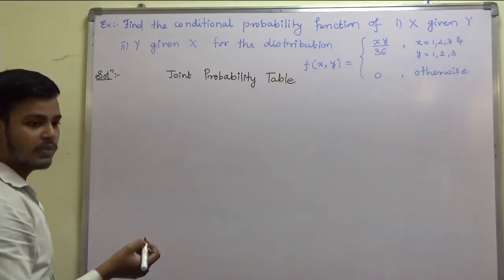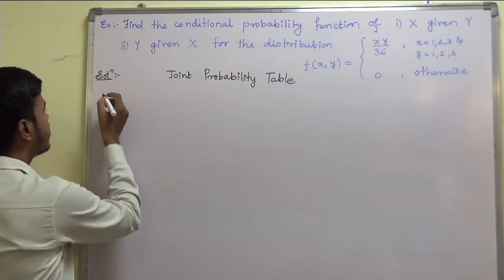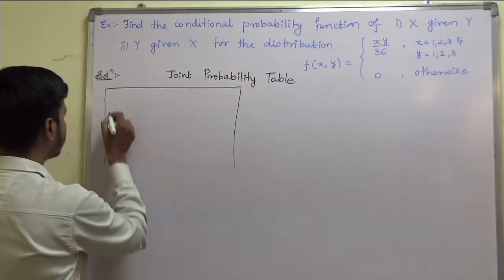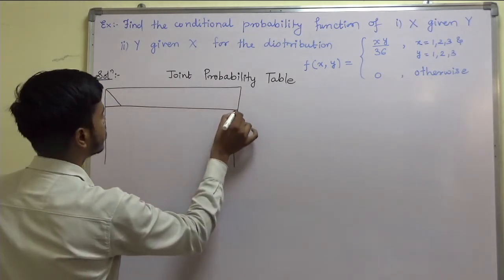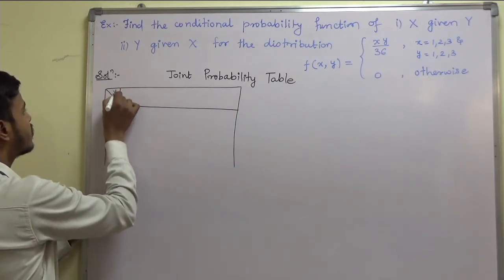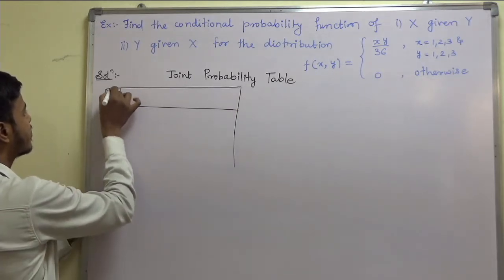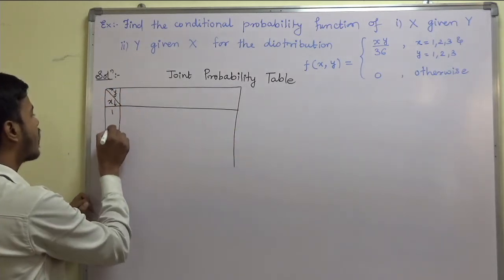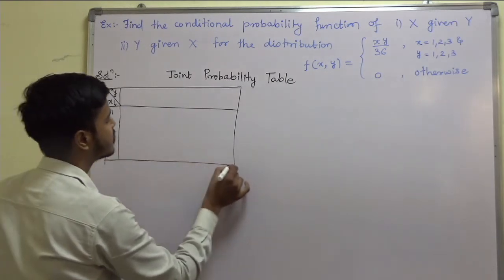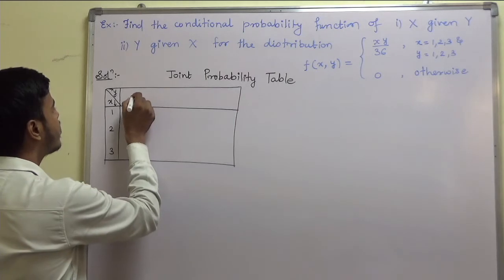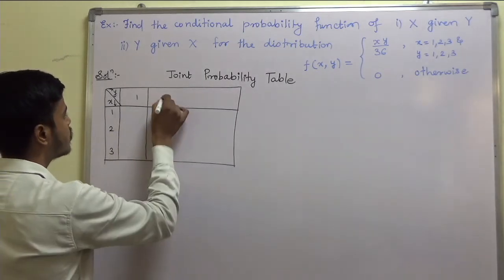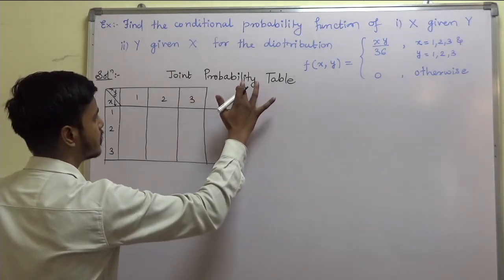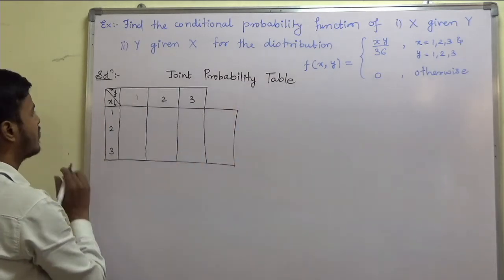In the joint probability table, we make a table where one axis has values of Y and the other has values of X. The values of X we have are 1, 2, and 3, and likewise the values of Y are 1, 2, and 3.